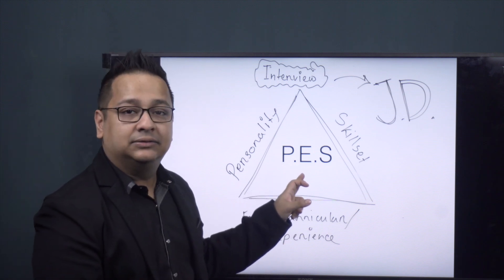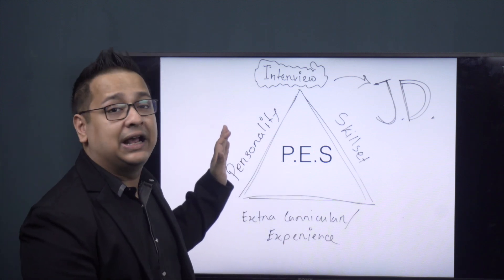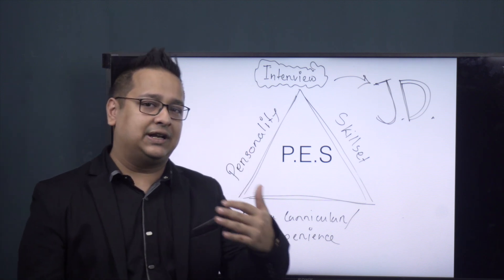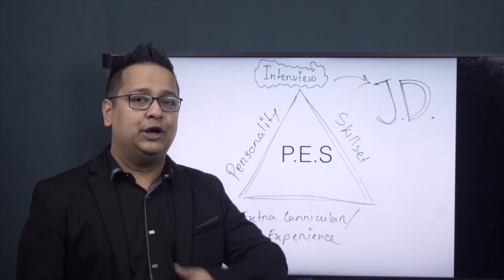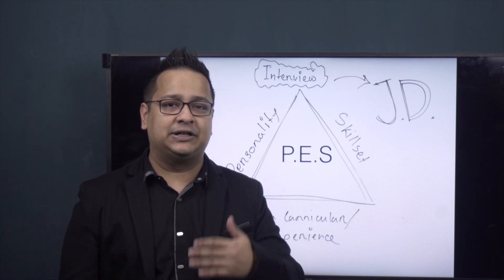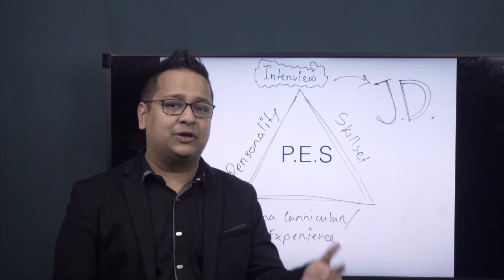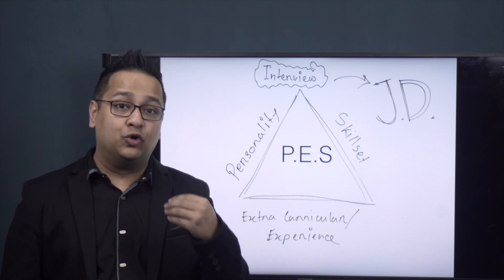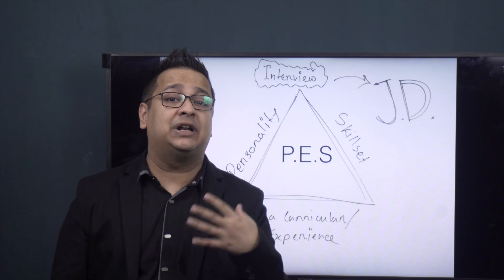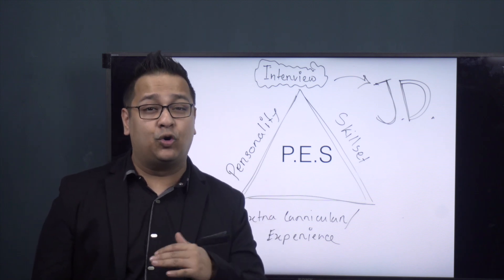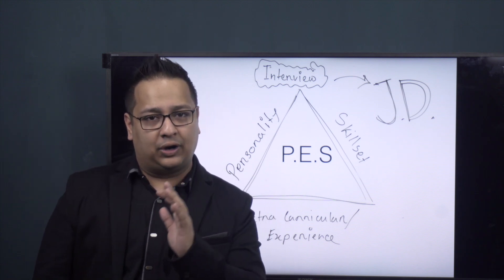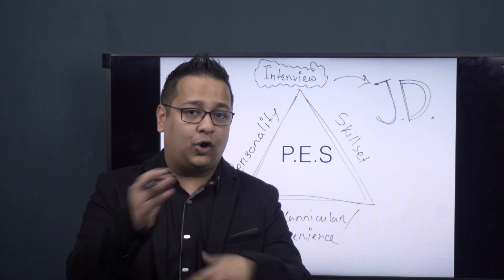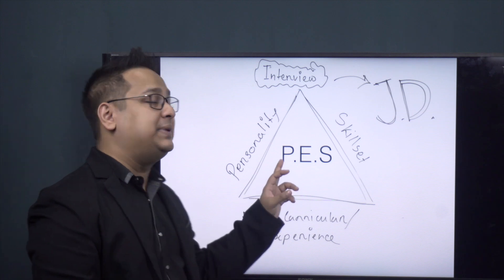The P actually stands for personality. What is your personality? Are you extroverted, the center of attraction? Or are you an introverted person, a deep thinker, analytical, good with numbers? What kind of personality do you have? Do you like to be more outgoing or more indoors? What do you like? What are your hobbies? What are your dreams? All that is included in the P part.